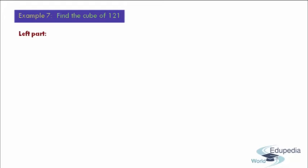Friends, in our earlier sessions we have seen what are the parts of process. The first part of process that we have to do is the left part. In the left part, the first step is we have to find the nearest base of the given number. Here the given number is 121 and the nearest base for this number is 100.